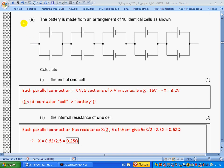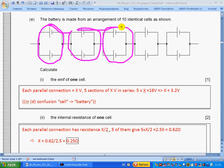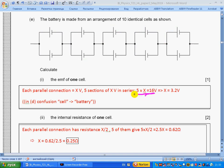Part e: The battery is made from an arrangement of 10 identical cells as shown. Calculate the emf of one cell. Each parallel connection, if we call emf of one cell X, is also X. There are five of them connected in series, so we have 5X volts, and this 5X equals total voltage of the battery, 16 volts. From this we get X equals 3.2 volts.